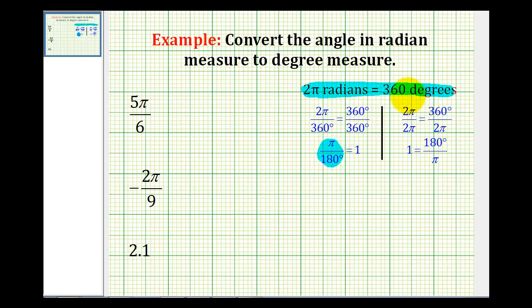But we could also take the initial equation and divide both sides by two pi radians. And if we did, it would simplify to one equals 180 degrees divided by pi radians. And this is also a unit fraction.